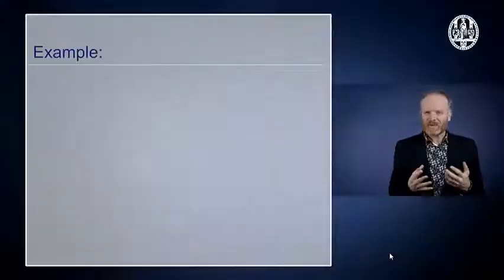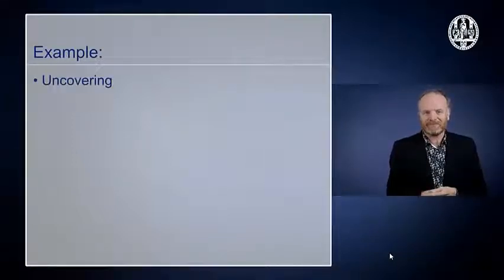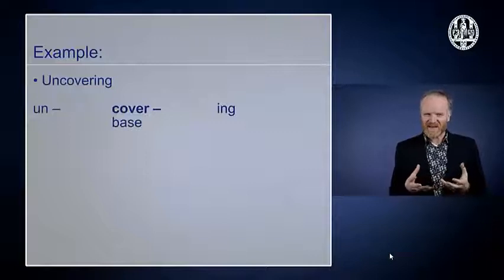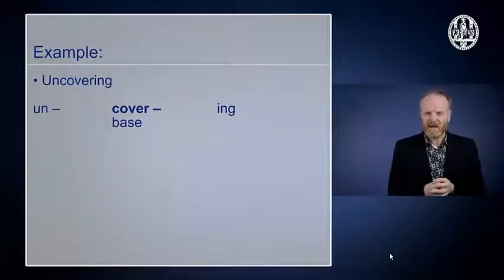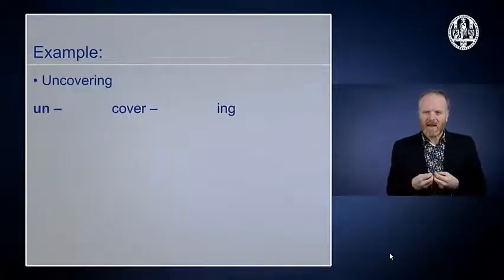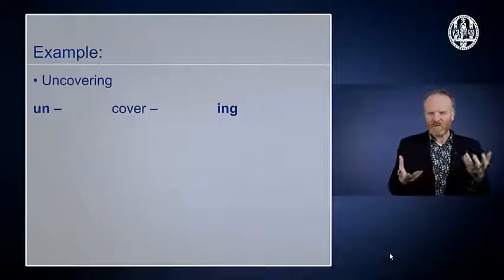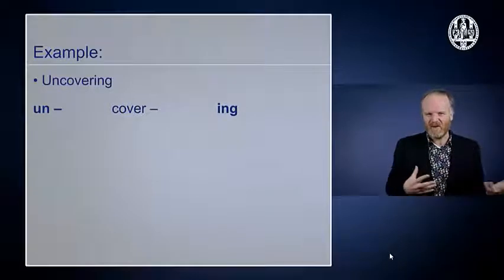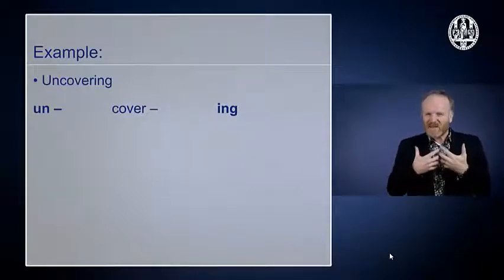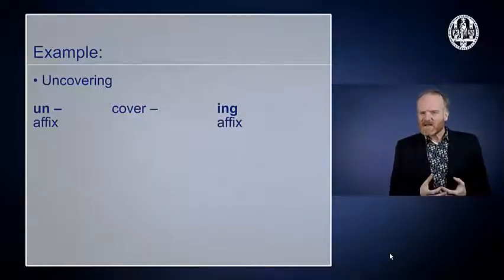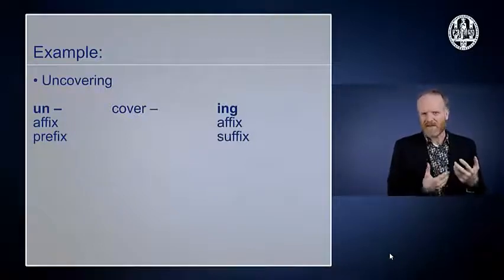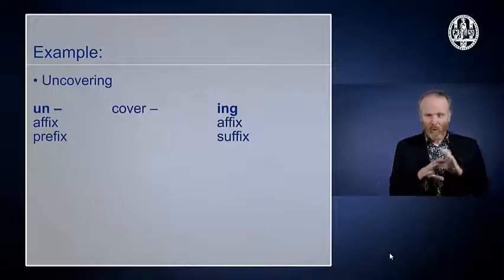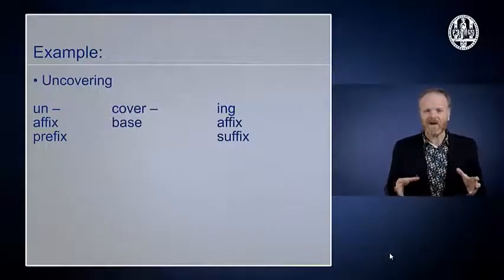So words are hard to define and at the same time we know a word whenever we see one or hear one. Take for example an English word like uncovering. That consists of three parts. There's a base, cover. We call it a base because cover is an independent word in its own right. We can say I cover you, something like that. And there's two additions, un and ing. These are not words in their own right. You cannot use them independently from some other word. You cannot say I'm very un or I'm inging. These things which are not independent are called affixes. As a matter of fact, un is called a prefix. Things occurring before the base are called prefixes. And ing is called a suffix. Things after the base are called suffixes. All of these bits, the base and the affixes are called morphemes.